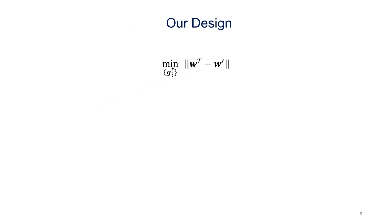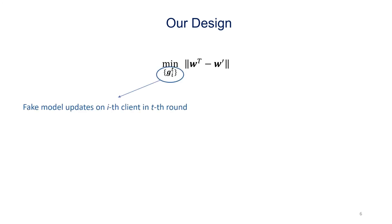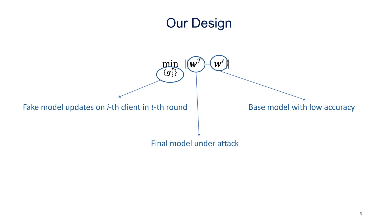Next, I will introduce our design. Our intuition is that an attacker can choose an arbitrary model called a base model, which has low test accuracy. For instance, an attacker could randomly initialize a model as the base model. If we can force the global model to behave like the base model whose test accuracy is low, then the test accuracy of the learned global model would likely be low too. Therefore, we formulate our attack as an optimization problem. In the problem, G_i^t represents the fake model updates on the i-th client in the t-th round. W_t means the final global model under our attack, and W' represents the base model with low accuracy. We solve the optimization problem while continuously driving the global model towards the base model in each FL round.